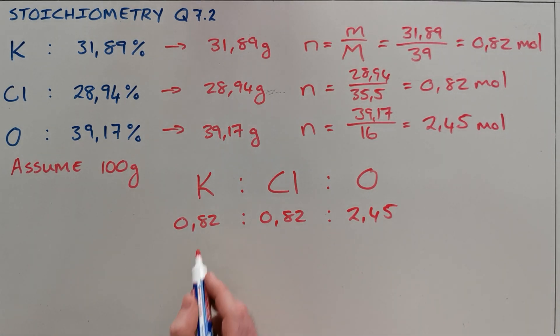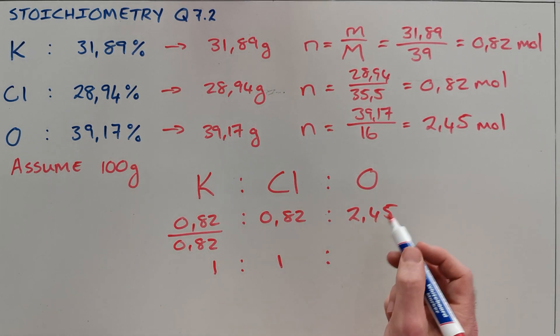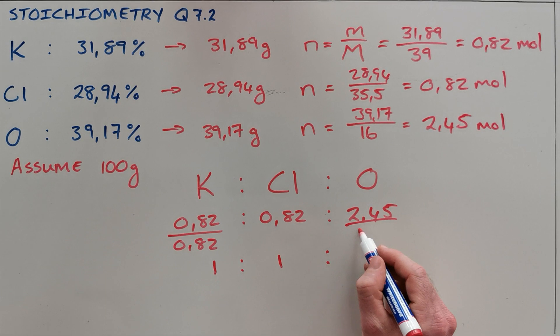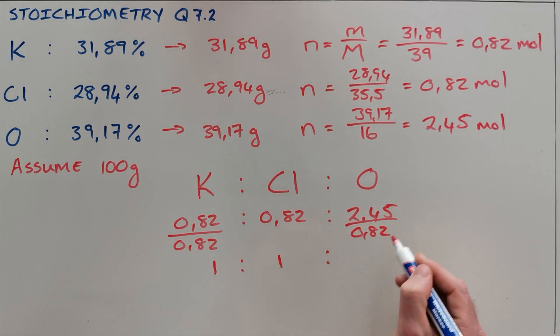The way that you simplify this to get a simpler ratio is you divide by the smallest number, which in this case is 0.82, and you divide all three. So 0.82 divided by 0.82 gives you 1, and 2.45 divided by 0.82 gives a number very close to 3. That tells us the empirical formula for this substance is K1Cl1O3.